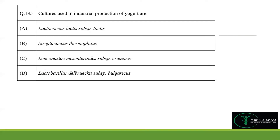Coming to question 135: cultures used in industrial production of yogurt. This is an MSQ question. We need to find out the cultures used in industrial production of yogurt. The two cultures are Streptococcus thermophilus and Lactobacillus delbrueckii subsp. bulgaricus.